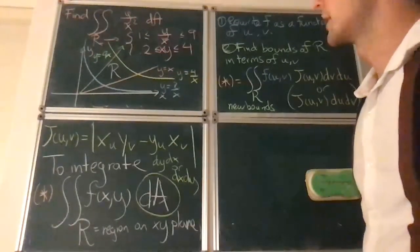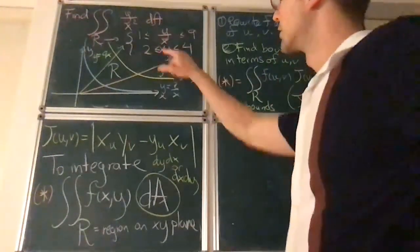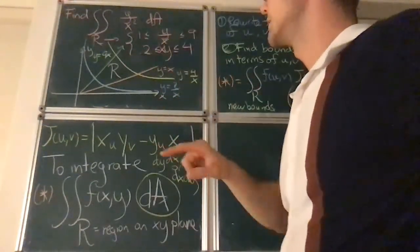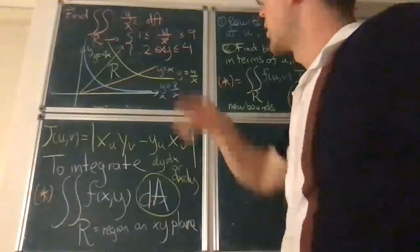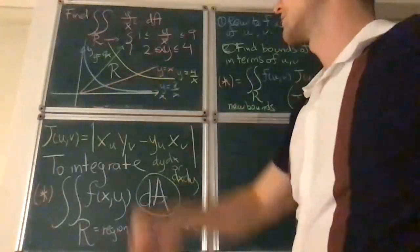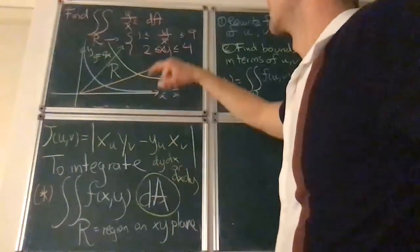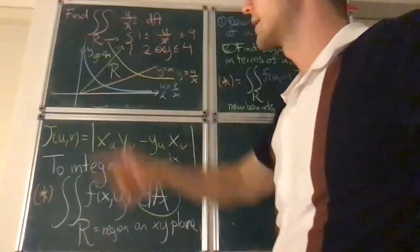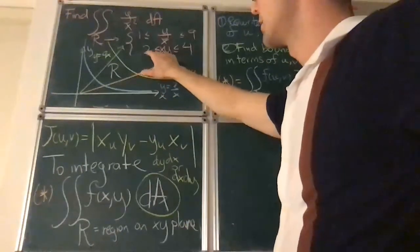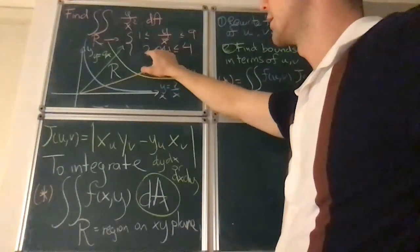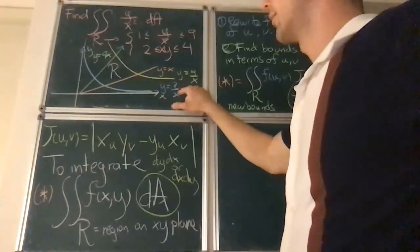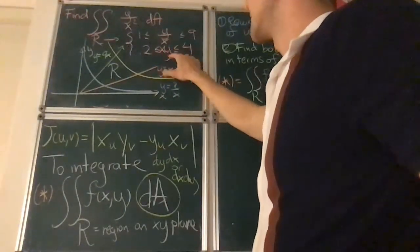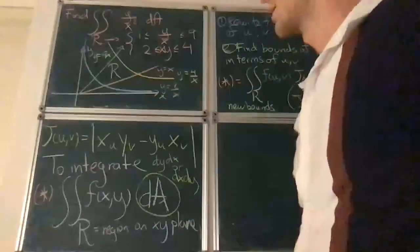Well, remember that to represent an inequality, you represent the equality first. So the equality y over x equals 1 is the same as saying that y equals x, and y equals x is a straight line through the origin, which is the one that you see here. The equality y over x equals 9 is the same as saying that y equals 9x, and so that gives you this other straight line. And then the equality 2 equals x times y is the same as saying that y equals 2 over x, and y equals 2 over x is like this type of curve. And the equality x times y equals 4 is the same as saying y equals 4 over x, which is this other type of curve.